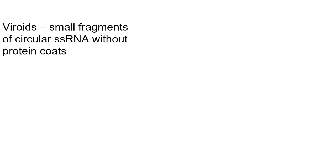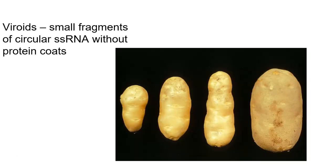One of the interesting materials we have are what we call viroids. These are small fragments of circular single-stranded RNA that do not have protein coats. The more we study these, the more we find small fragments of RNA in the environment that can sometimes be pathogenic — not necessarily in humans. Here we're looking at potato spindle tuber viroid. The potato on the right is a normal potato, and the others are spindly and not very big around. They are infected with a viroid, which is a single-stranded RNA with no protein coat.